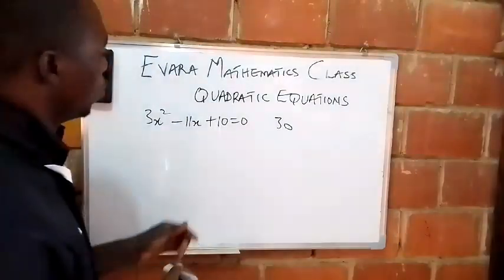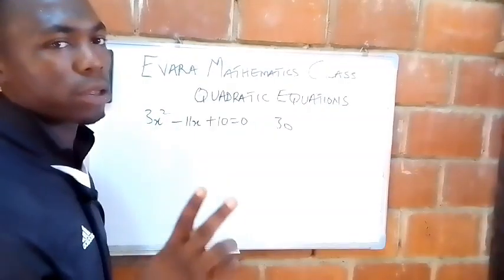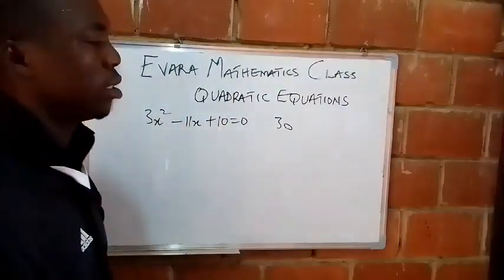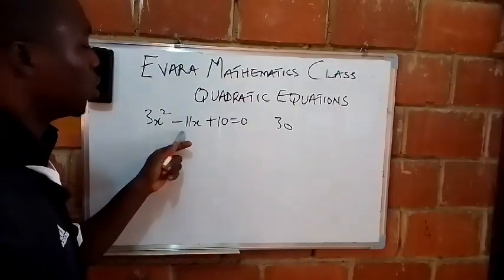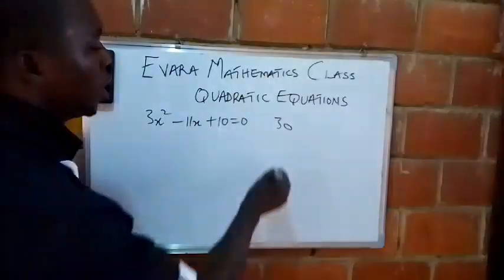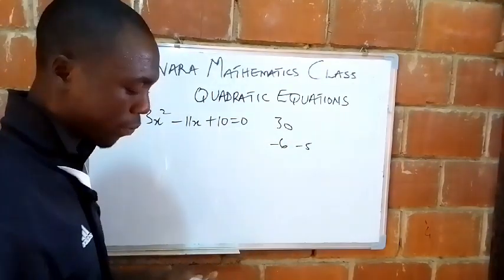Then you try to get two factors of 30. When you add them together, they'll give you minus 11. That's minus 6 and minus 5.